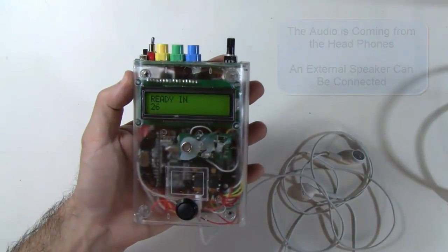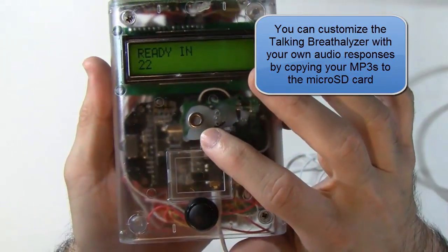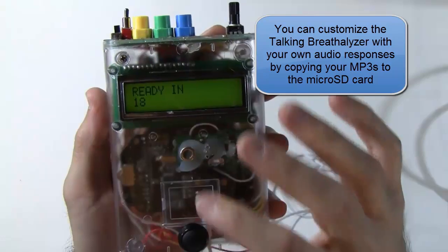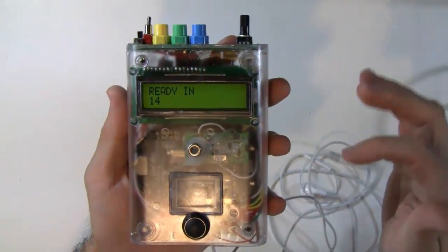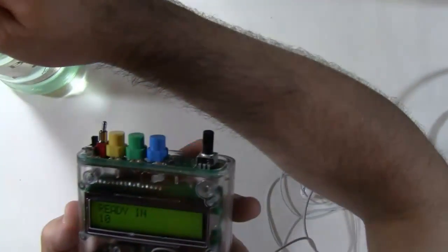The way a breathalyzer works is actually a chemical reaction. Inside this alcohol sensor, there's a heating element, and the alcohol will react with that heating element, and the voltage will change. Then all this does is just read that voltage and correlate that to how much you've had to drink.